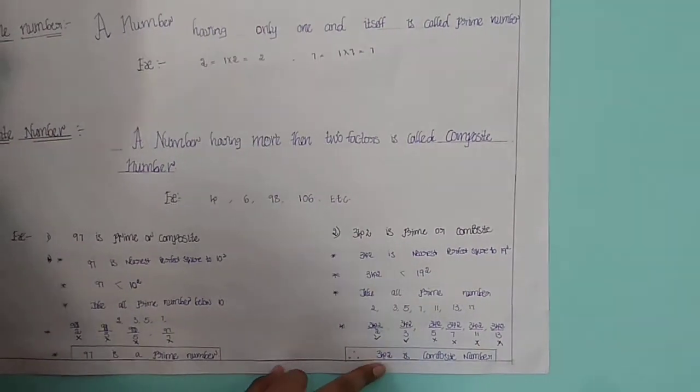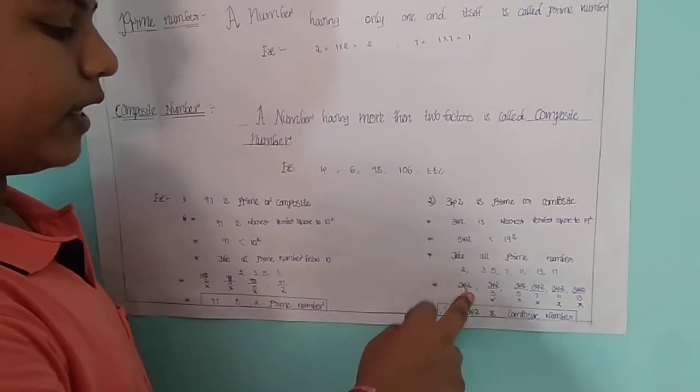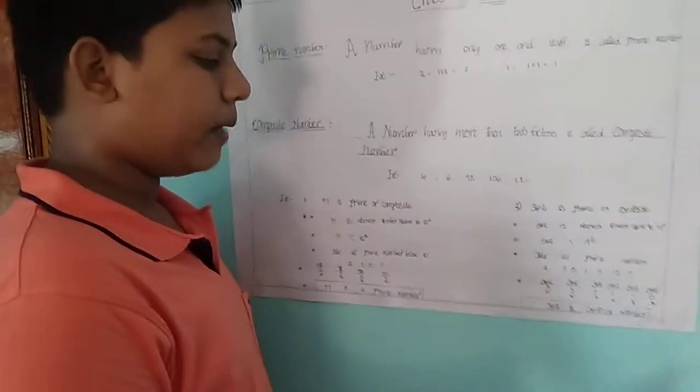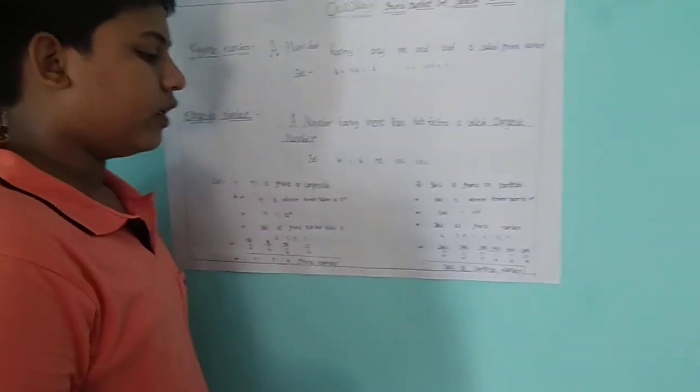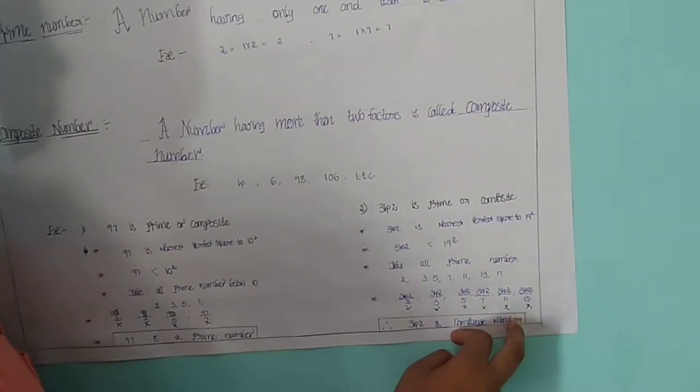That's why 342 is a composite number. Because it is divisible by 2 and 3, it has more than two factors. That's why 342 is a composite number.